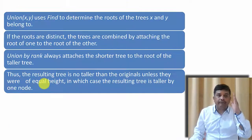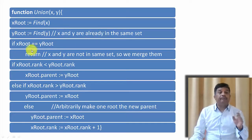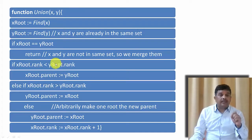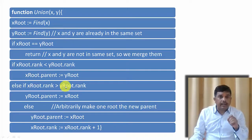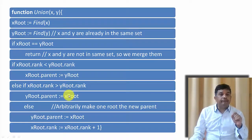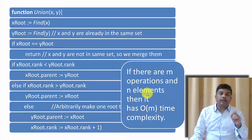Let us understand this with the algorithm. Function union of x and y: call find of x and name it x's root, call find of y and name it y's root. If both elements are in the same tree we cannot combine them and simply return. If they are not the same, we follow these steps: if rank of x's root is less than rank of y's root, then y's root becomes parent of x's root. Otherwise if rank of x's root is greater than rank of y's root, then x's root becomes parent of y's root. Otherwise if both ranks are the same, x's root becomes parent of y's root and x's root rank is increased by one. For this the time complexity is O(m).